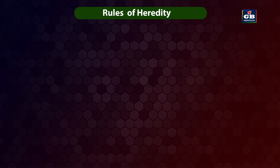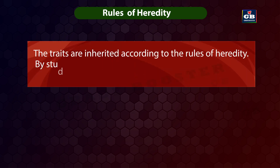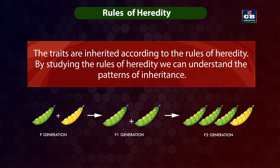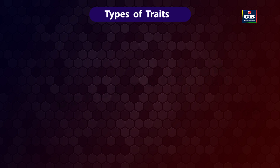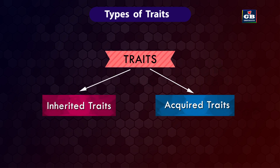The traits are inherited according to the rules of heredity. By studying the rules of heredity, we can understand the patterns of inheritance. The traits are of two types: inherited traits and acquired traits.